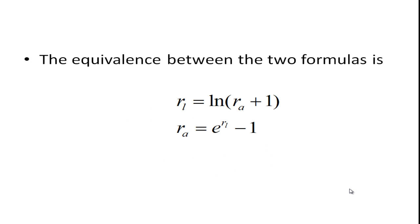The equivalence between the two formulas is the following. The logarithmic return equals the natural log of RA plus 1. Why do I say RA plus 1? Well, what was RA? RA was the future value divided by the present value minus 1, and so if I add 1 to it, it's going to be future value over present value, which is the equation we said we had.